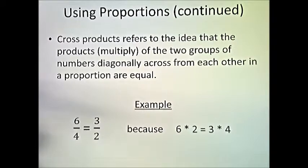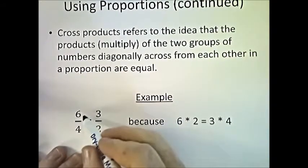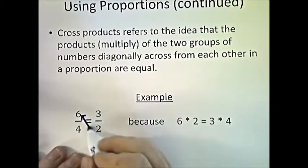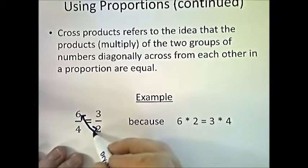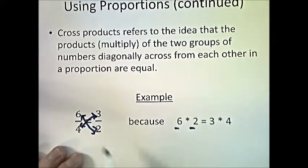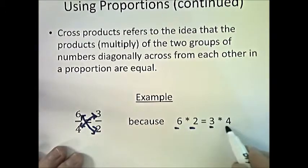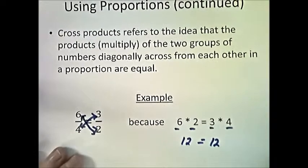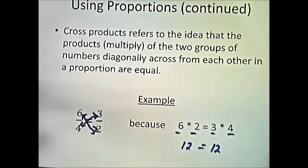Cross products refers to the idea that you can multiply across diagonally between two proportions and the products will be equal. For example, if 6 over 4 equals 3 over 2, you take 6 times 2 and 3 times 4. Six times 2 is 12, and 3 times 4 is 12 — so both cross products are equal, confirming the proportions are equivalent.